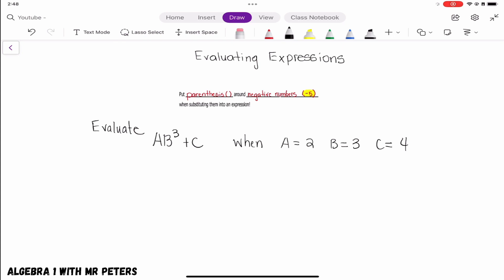So instead of putting A down, I'm going to put 2 and I'm going to put parentheses around it because I know I'm multiplying. And then we're going to have 3 to the third power and then plus 4.